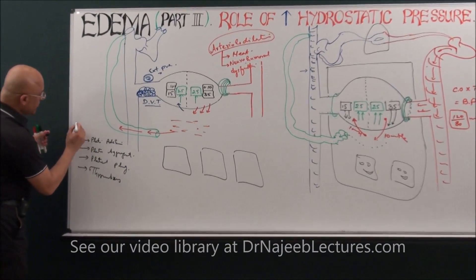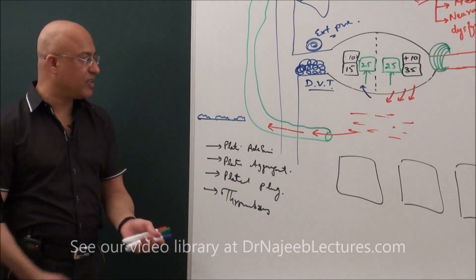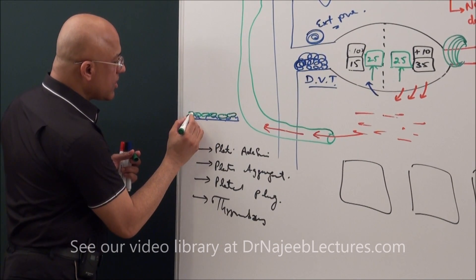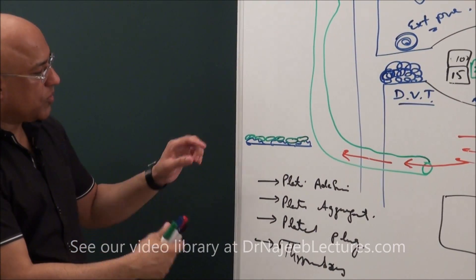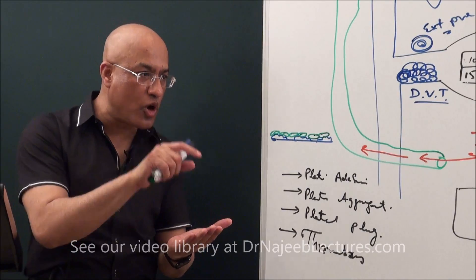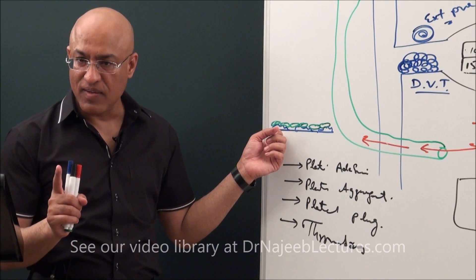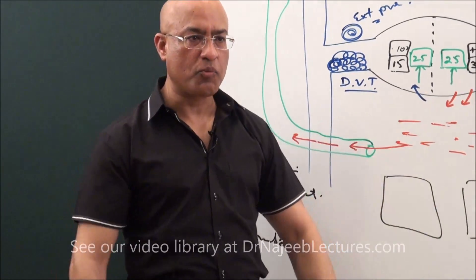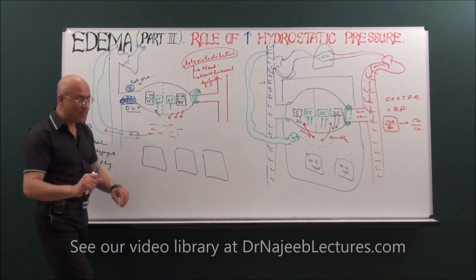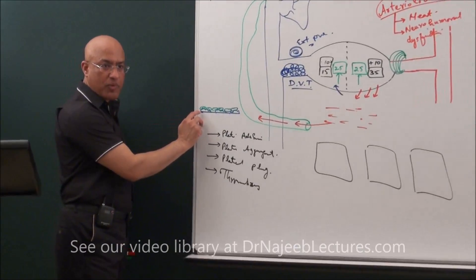Let's suppose these are your endothelial cells — injured endothelial cells. When platelets first come and stick here, they are sticking to a non-platelet surface. This first layer of platelets sticking to a non-platelet surface is called platelet adhesion. Just like boys standing against this whiteboard — that is platelet adhesion.